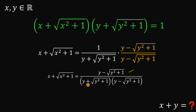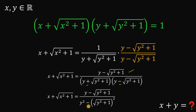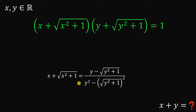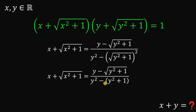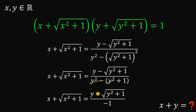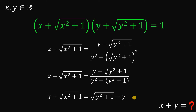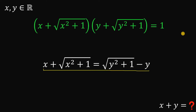On the denominator, we have a sum and difference. Applying the sum-and-difference rule, the denominator becomes y squared minus the square of square root of y squared plus 1. We can simplify this as y squared minus the quantity y squared plus 1. The y squared and negative y squared cancel out, so the denominator is just negative 1. Therefore, y minus square root of y squared plus 1 divided by negative 1 gives us: x plus square root of x squared plus 1 equals square root of y squared plus 1 minus y.